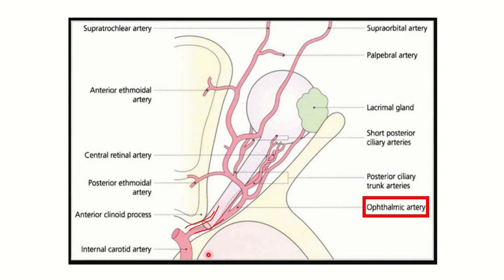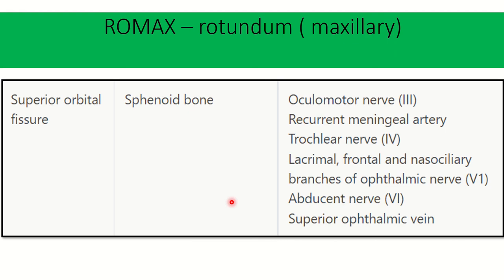Through foramen rotundum, the maxillary division of the trigeminal nerve passes. The mnemonic is ROMAX — 'RO' for foramen rotundum and 'MAX' for maxillary. So through foramen rotundum, the maxillary branch of the trigeminal nerve passes.